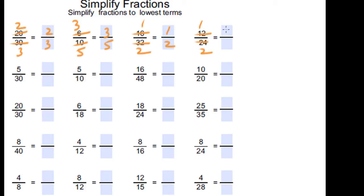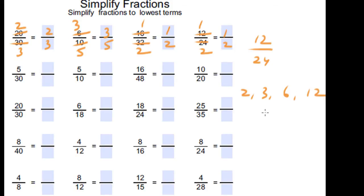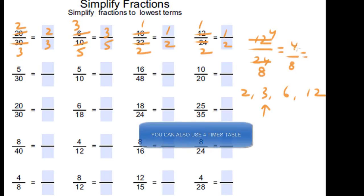12 times 1 is 12 and 12 times 2 is 24, so 1 over 2. If you don't know your 12 times table, you can use any other table that has 12 and 24 as multiples — for example the 2, 3, 6, or 12 times tables. We'll use the 3 times table: 3 times 4 is 12 and 3 times 8 is 24, giving 4 over 8. 4 over 8 can be further simplified: 4 times 1 is 4 and 4 times 2 is 8, so 1 over 2.